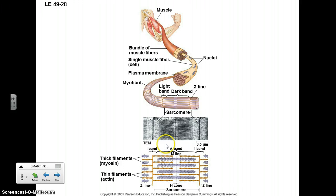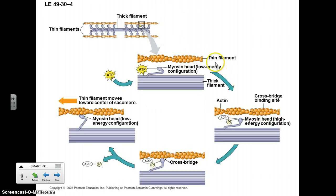The basic unit of muscle is the sarcomere. Actin and myosin protein filaments slide past each other — coming together when the muscle contracts and sliding apart when it relaxes. A series of sarcomeres in a row makes a myofibril. A bundle of myofibrils makes a muscle fiber, and a bundle of muscle fibers makes a muscle. They all work together to contract and relax.